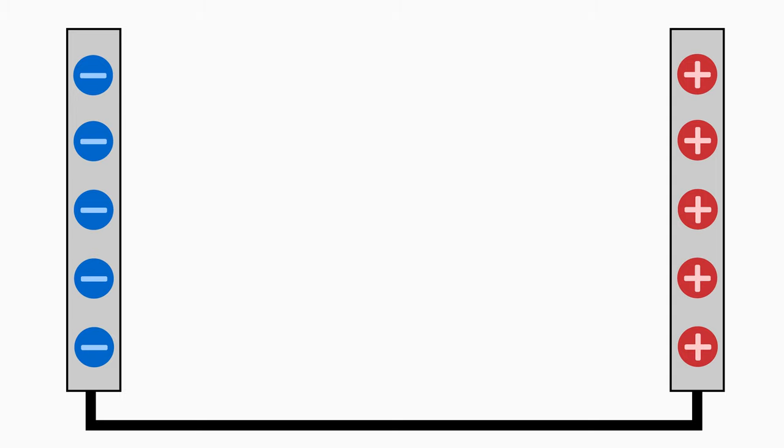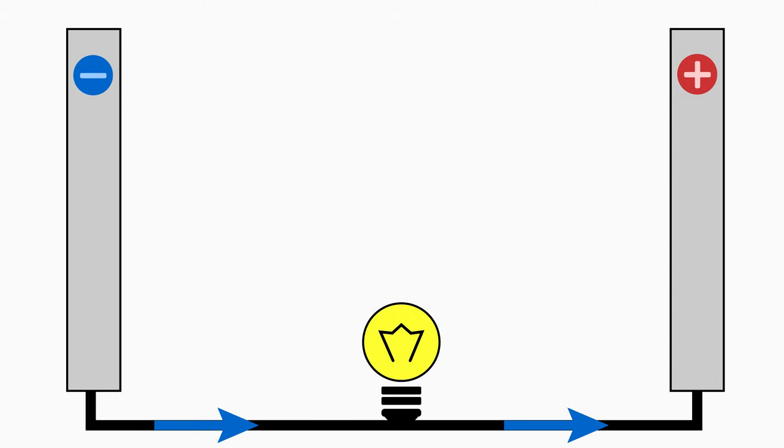From this you probably already recognize the first possible application of a plate capacitor. If you connect the two charged plates with a conducting wire and a small lamp, an electric current flows from one plate to the other and causes the lamp to light up until there is no more difference in charge on the plates. So with a capacitor you can store electric energy. But you can do much more with it.